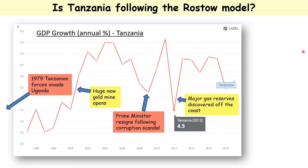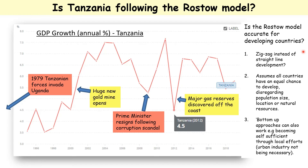Rather than development occurring in a linear fashion, there's a strong feeling that development actually might skip steps, take a different path, or even happen in this zigzag sort of way. Some people say that Rostow's model doesn't suit the poorer, developing countries of the world. Rostow also assumes that all countries have an equal chance to develop, disregarding their population size, location, or natural resources.